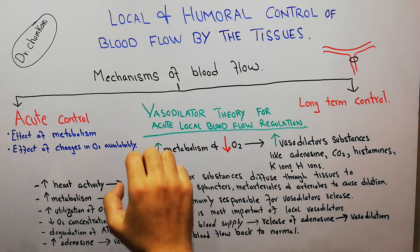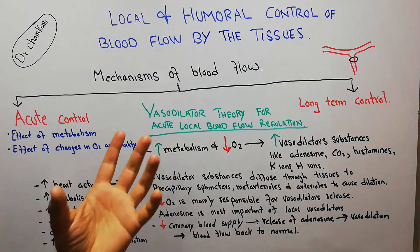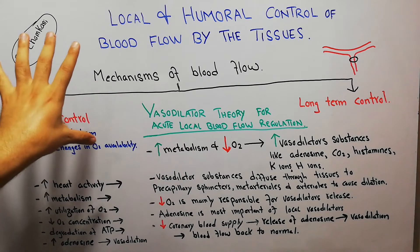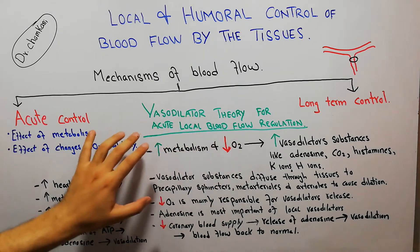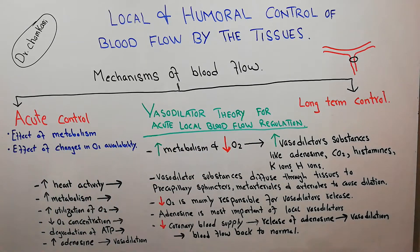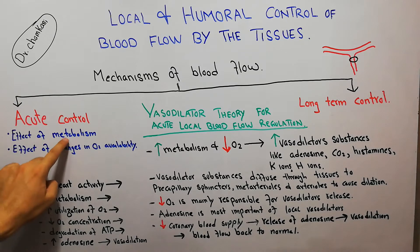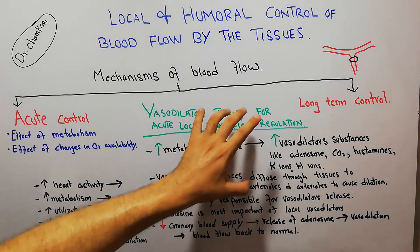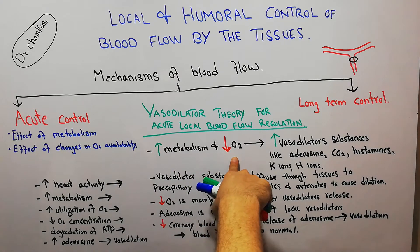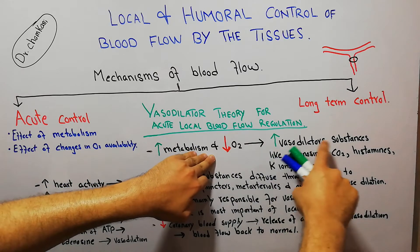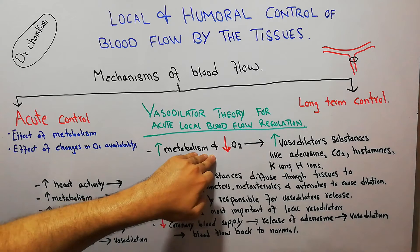To get a full understanding of this lecture, you should watch the previous two or three videos. The vasodilator theory for acute local blood flow regulation states that increase in metabolism and decrease in oxygen availability both lead to an increase in vasodilator substances.